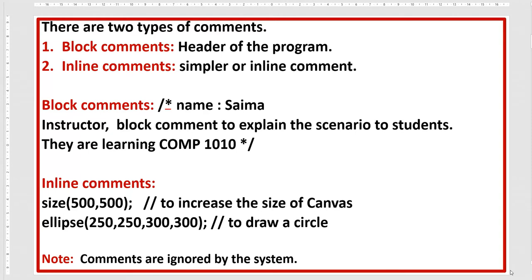If you can see the header of the program, block comments always start with the forward slash symbol and then you have to put the asterisk sign. This is the example, and the block comment consists of multiple lines.